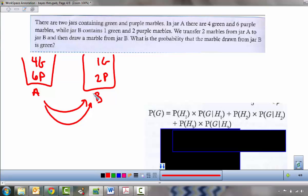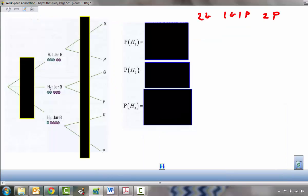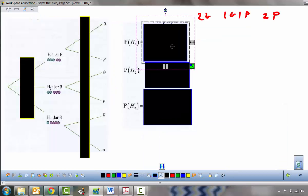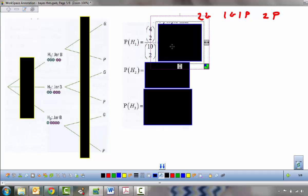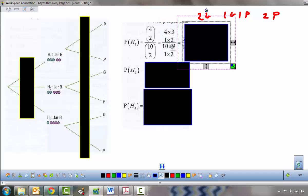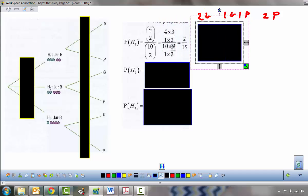So we can find our probability of picking a green by using this total probability formula. But before we can use it, as you can see, we need to know the probability of all these different hypotheses. So let's go ahead and calculate that. The probability of hypothesis 1 would be 4 choose 2 divided by 10 choose 2. So why 4 choose 2? Well, there were four green marbles in that first jar. And 10 choose 2 on the bottom because there are 10 total marbles and I want to choose two of them. This probability ends up being 2 over 15.